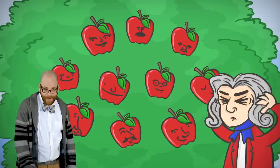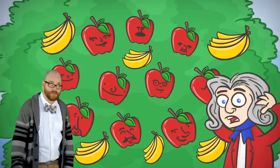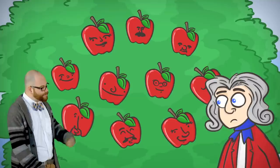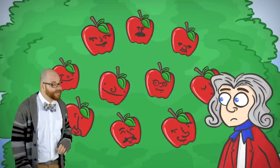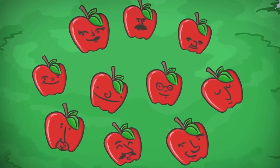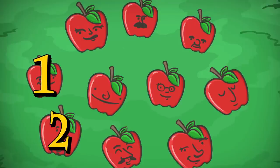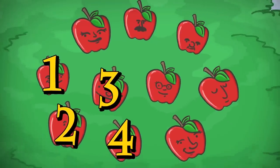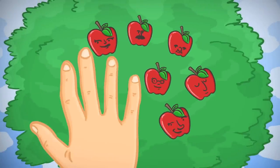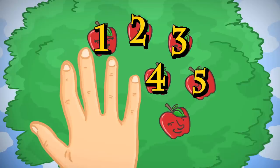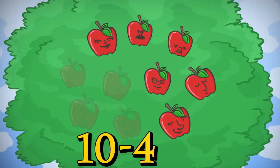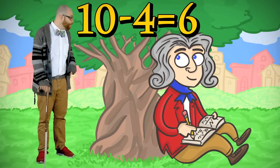Sheesh! This guy's gone bananas. Hold on right there, Mr. Sir Isaac Newton. I have an idea. What if we count out four apples that are right near each other? One, two, three, four. And we cover those up with our hand, so it's like they went away. Now we just count the rest of the apples that aren't covered up to see how much will be left. One, two, three, four, five, six. There's six. Six apples remain. So ten minus four equals six. You better write that one down. I will.